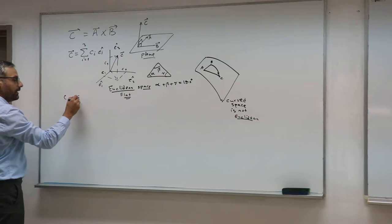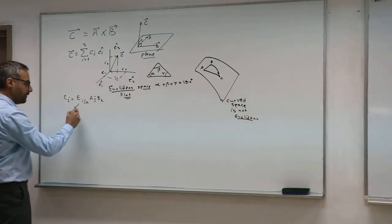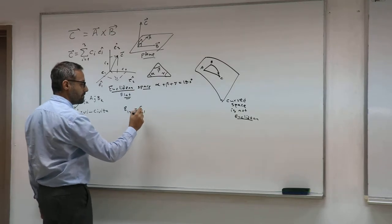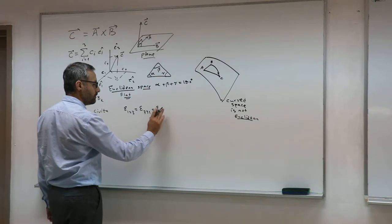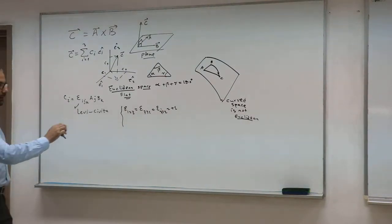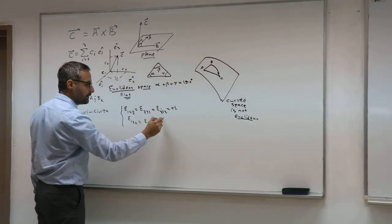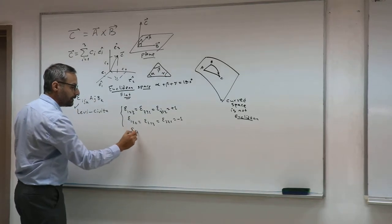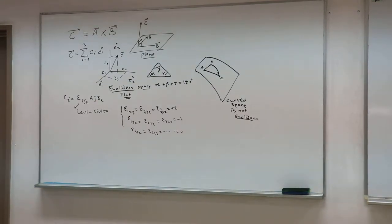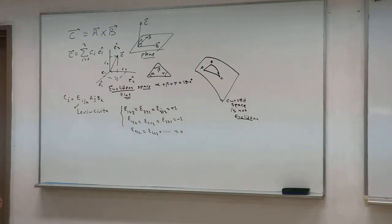Each component of this vector can be found by this expression. This is a new symbol — I call it the Levi-Civita symbol. The rule is: if the indices are running in cyclic order like 1,2,3 or 2,3,1 or 3,1,2, the value is plus one. If you swap any two of them, it will be minus one. And if you have a repeated index, it will be zero.